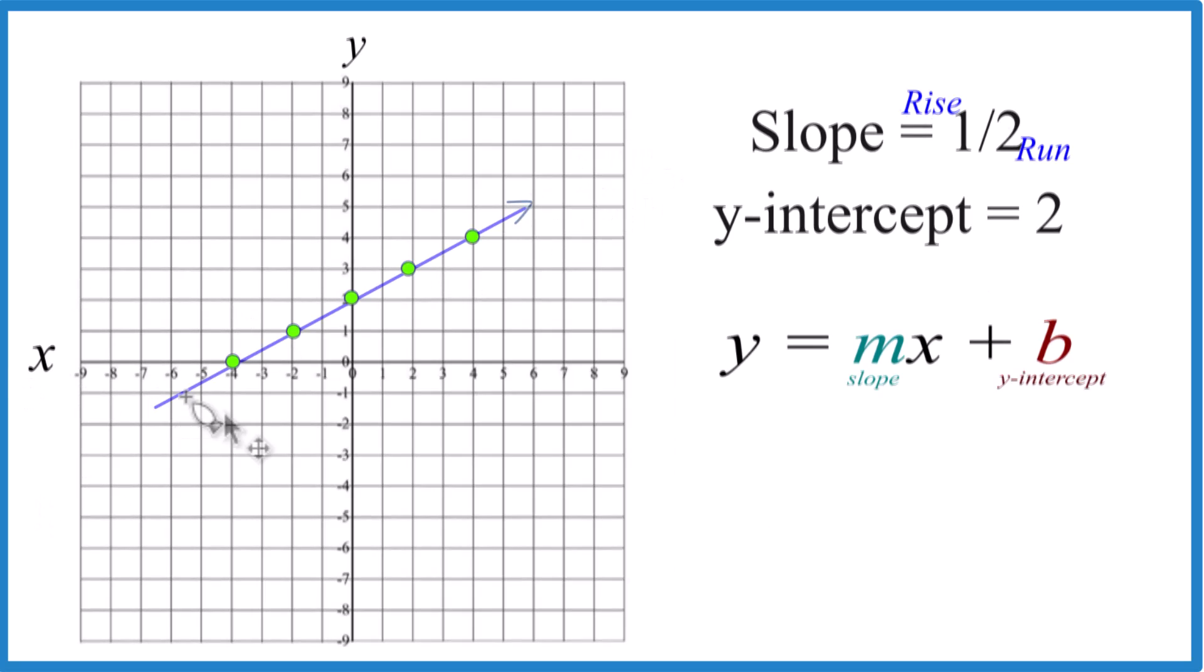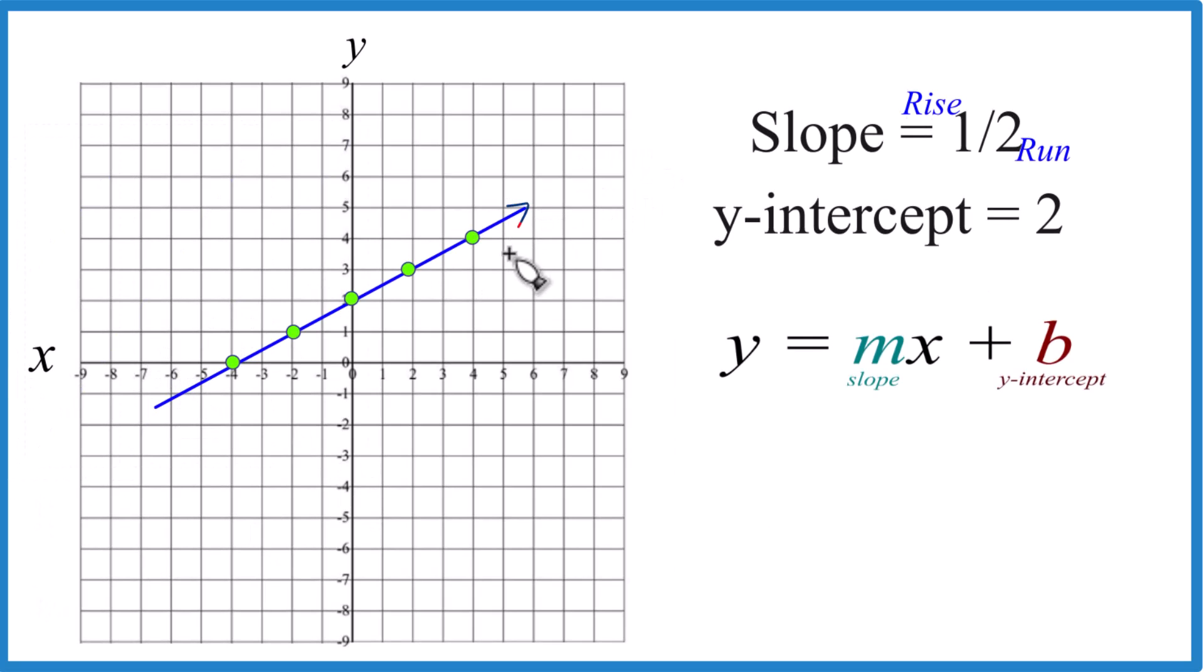Let's put a line through this. Put arrows on it, show it goes to infinity, and that's the graph when you have slope one-half and y-intercept two.